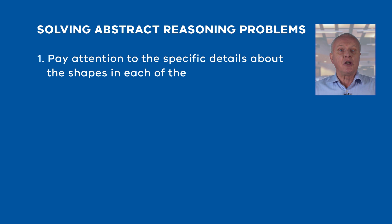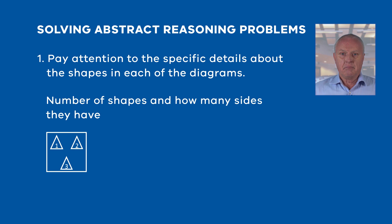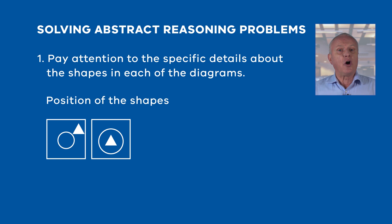Using a systematic approach can help you to find the answers to abstract reasoning questions. Before we look at some specific examples, here are some strategies to help you. Firstly, it's important to observe specific details about the shapes in each of the diagrams. For example, ask yourself: what types of shapes are there? How many shapes are there? How many sides do the shapes have? Are the shapes black, white, or filled with pattern? Are the shapes inside or outside another shape and are they touching? Are the lines broken or continuous?